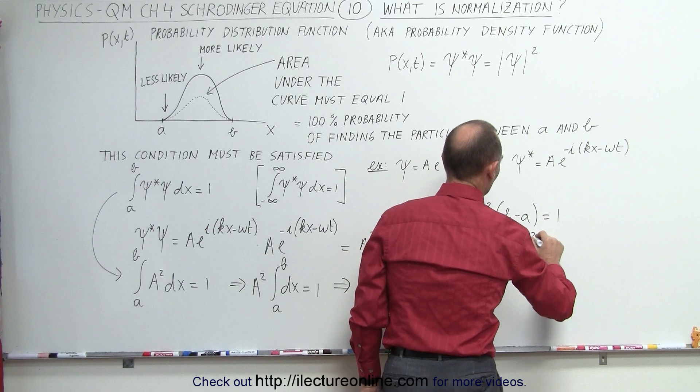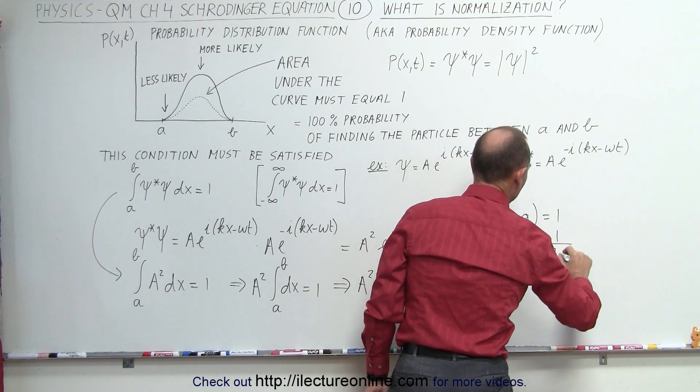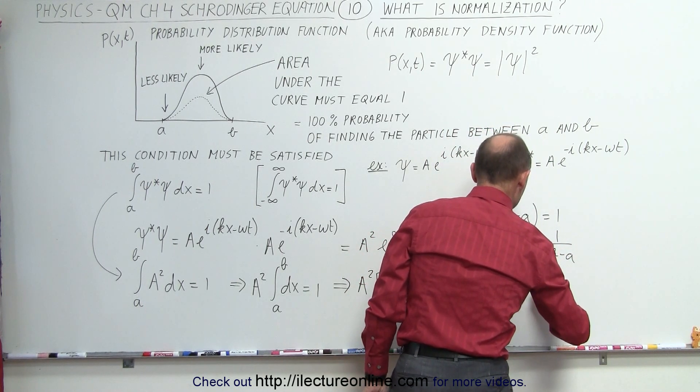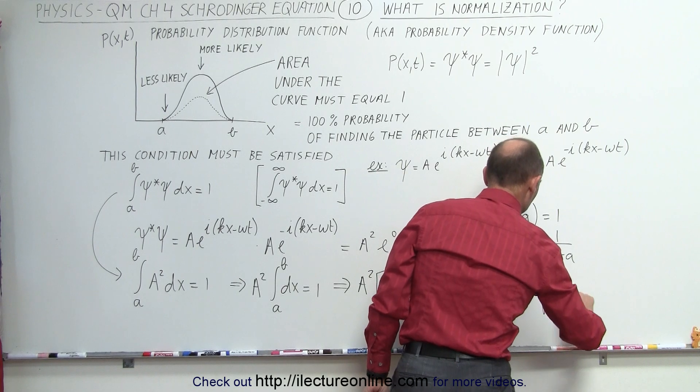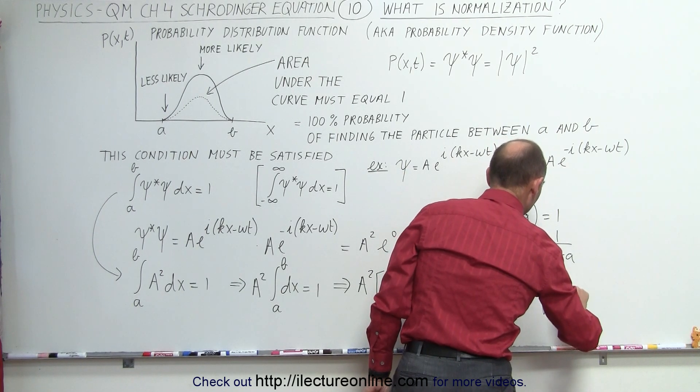Or a squared equals one over b minus a, or a equals one over the square root of b minus a.